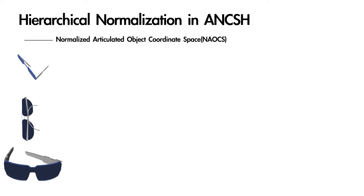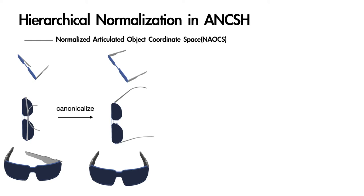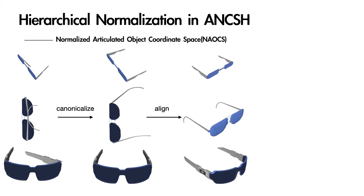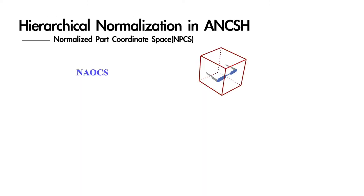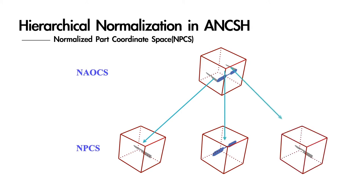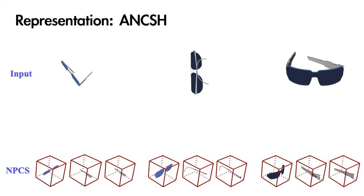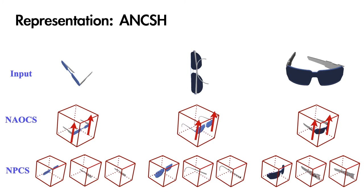In NOX, we first set the object articulations to the same predefined states, like right angles for the relevant joints of eyeglasses, then align their orientations. Furthermore, objects are centered and their scales are normalized. NPCS performs further centering and scale normalization to each individual part. One NPCS provides a reference frame for each part, which defines the canonical pose for one part. Under our hierarchical normalization, NPCS is an ideal place to study part attributes. NOX is a canonical space for studying joint parameters, like joint location and orientation. In summary, ANCHE constructs a learning-friendly canonical representation which can facilitate inter-category generalization.